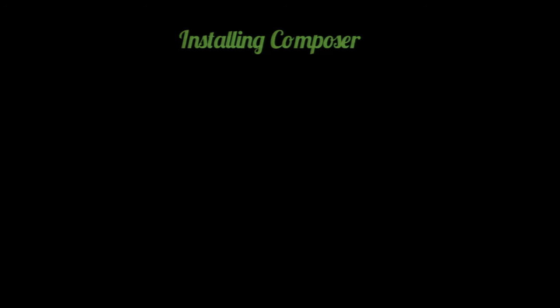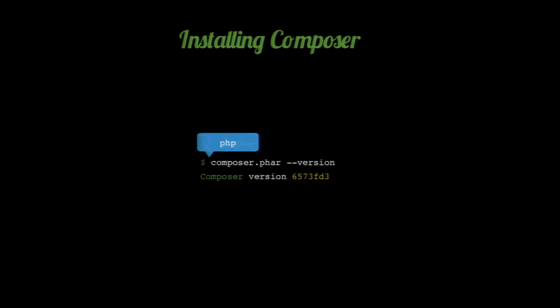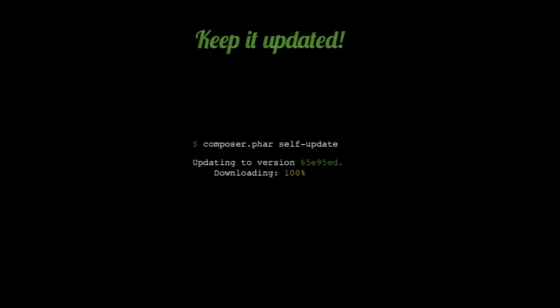Once you install it, you can do a quick check with 'composer.phar --version'. Depending on your system configuration, you might need to add PHP in there to make sure it knows it's PHP code. You'll get the hash of the current version installed. Very important — this is still beta, so updates are going out all the time. It's very important to keep it updated using the self-update command, which will replace the current phar with the new version.